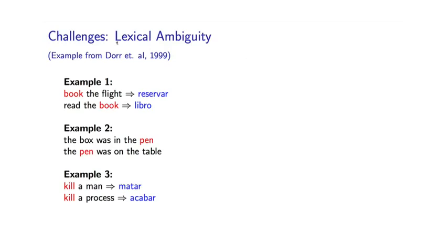So here's the first example. These are examples of lexical ambiguity, and these examples are taken from an article by Bonnie Dorr and others from 1999. Several of the examples on the subsequent slides are taken from this same paper. So if we look at a word like book in English, it has two quite distinct meanings as illustrated by these examples. So if I say book the flight, it is a verb and it has one meaning. If I say read the book, it is a noun and has a quite different meaning.